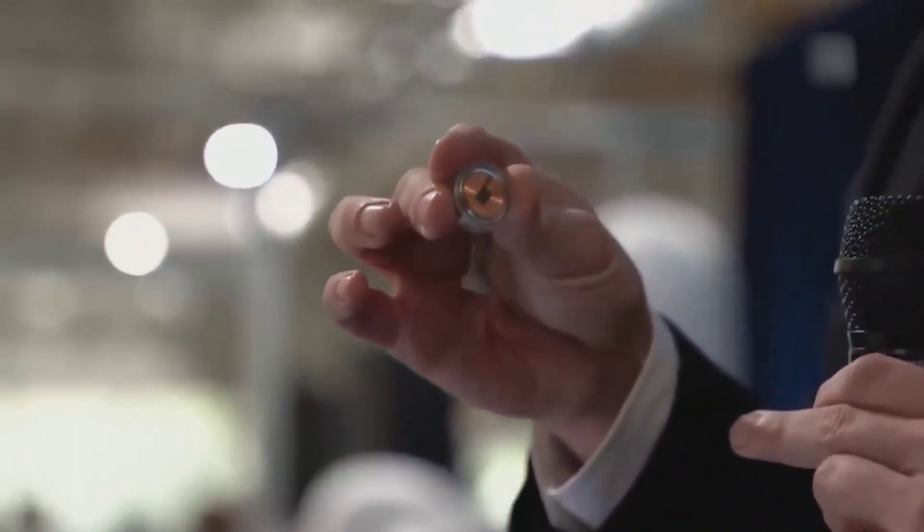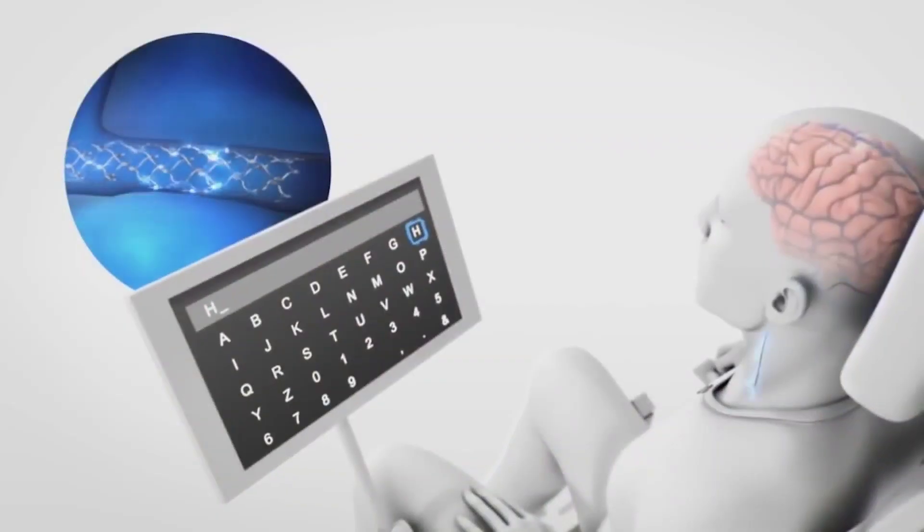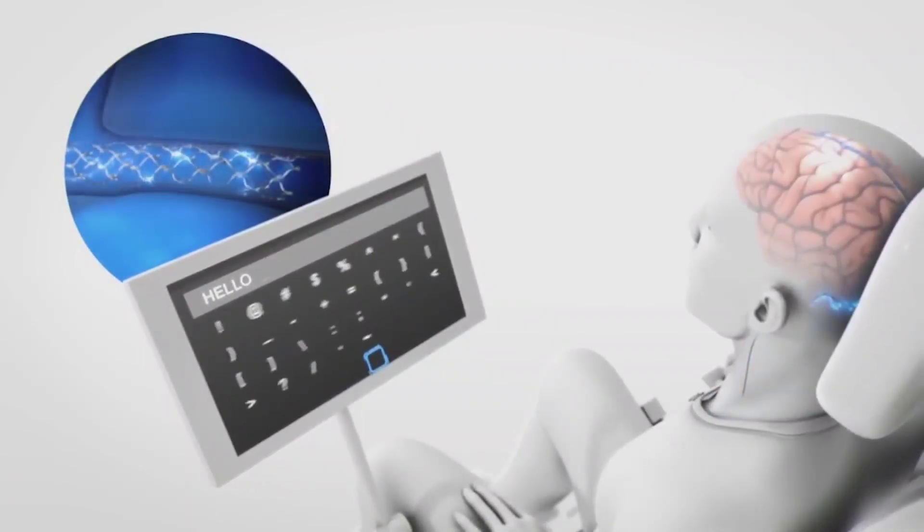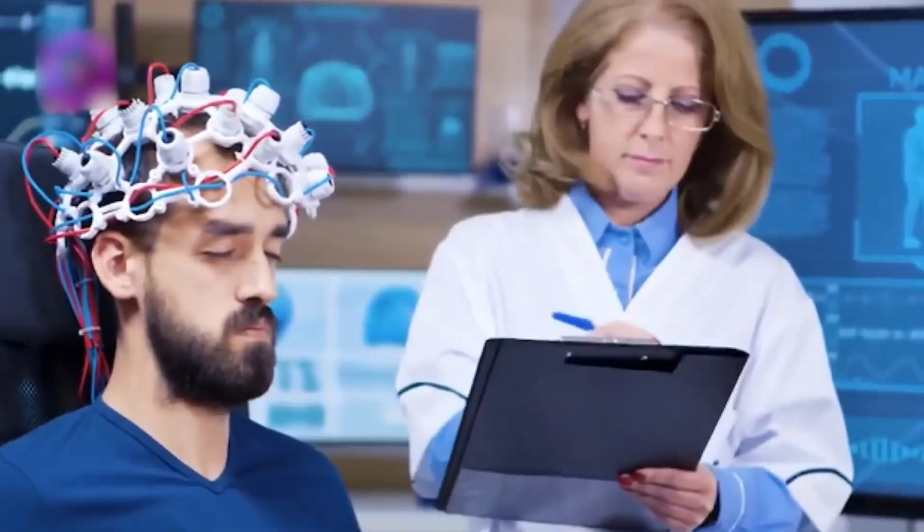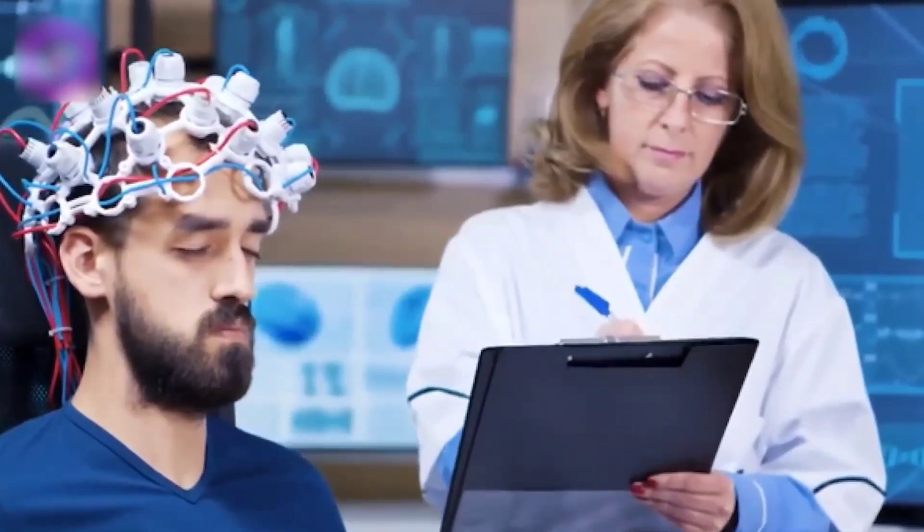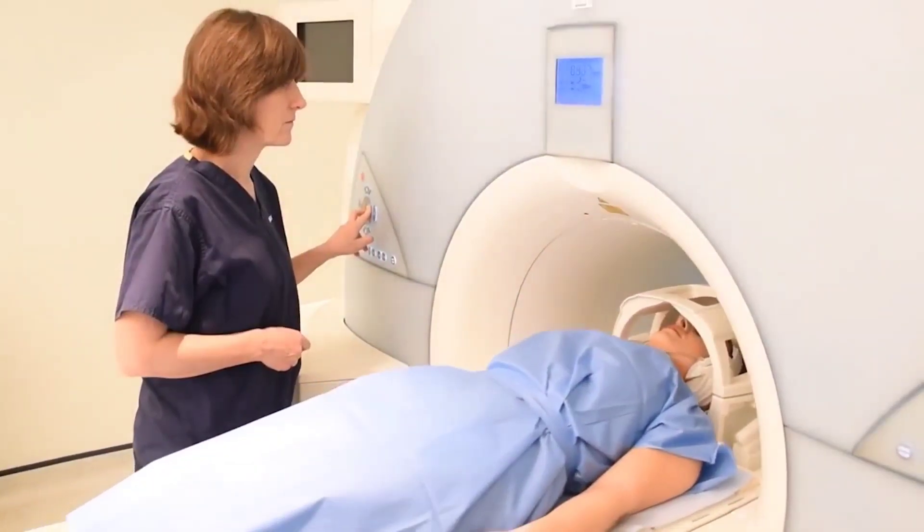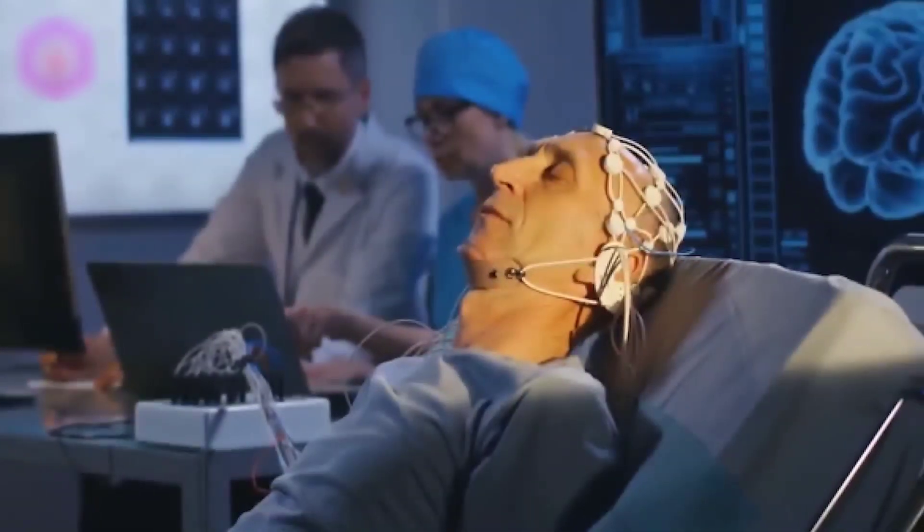So Elon Musk announced his most sci-fi project to date this week. A computer chip attached to extremely thin wires and electrodes, all of which are intended to be implanted in a person's brain by a surgical robot. The implant would communicate with a computer via a wireless connection to a small behind the ear receiver.